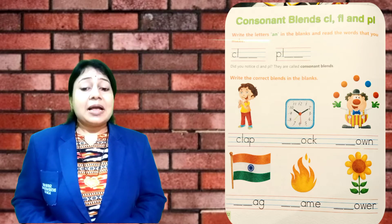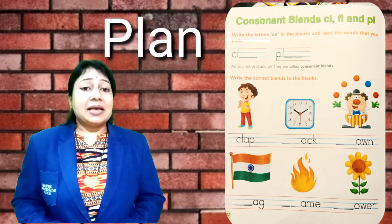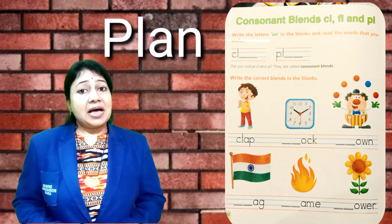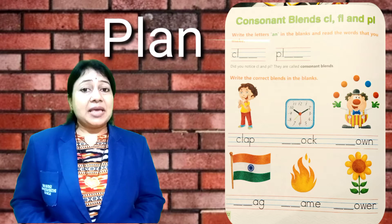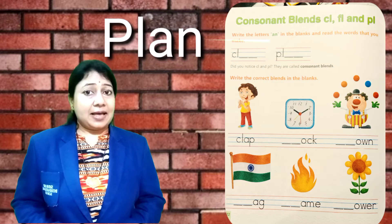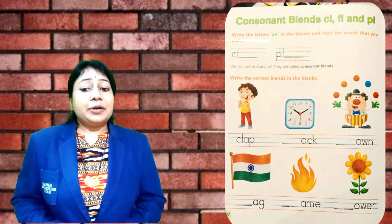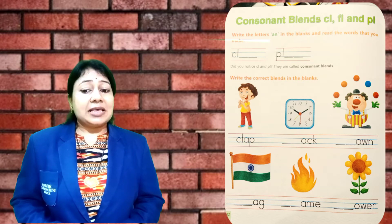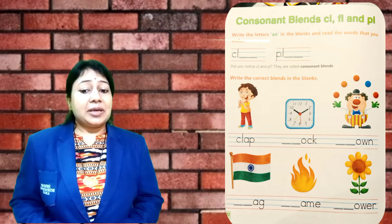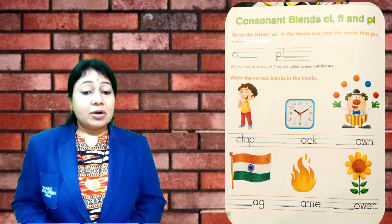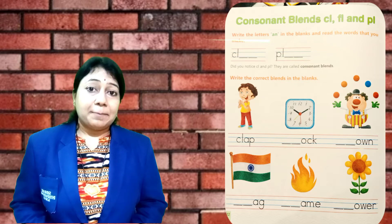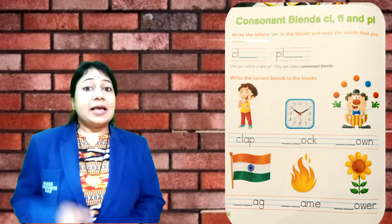P, L, A, N — plant. Did you notice? C, L and P, L — these are called consonant blends.